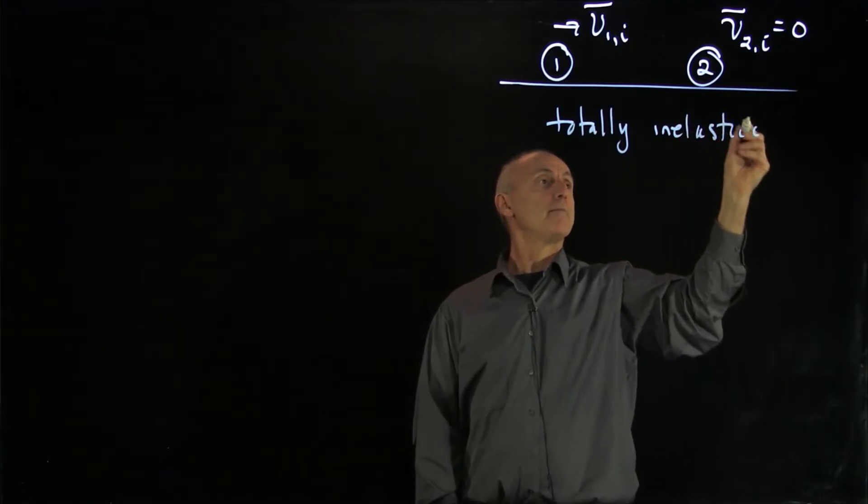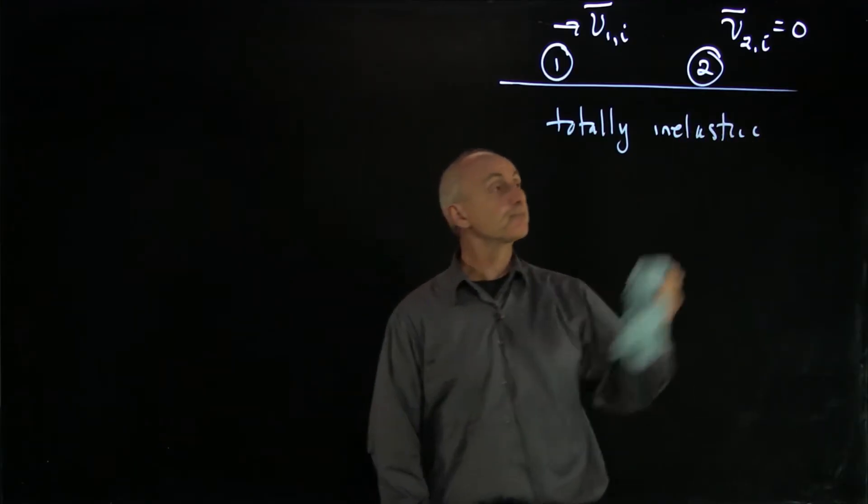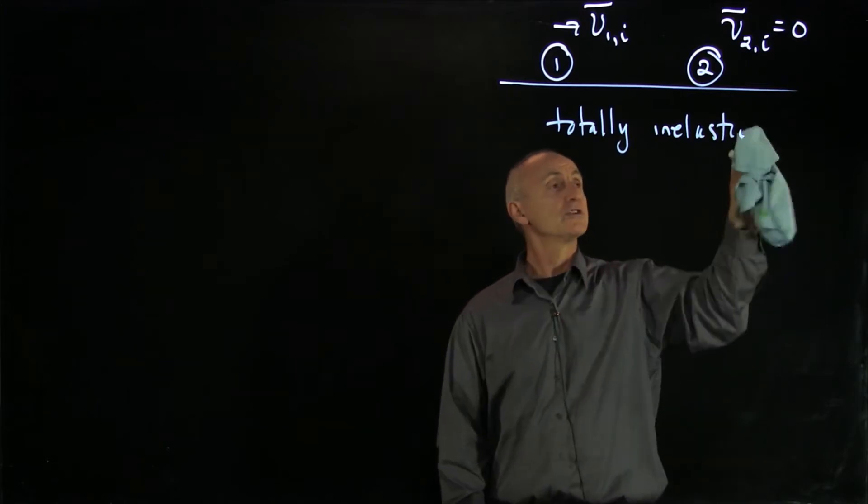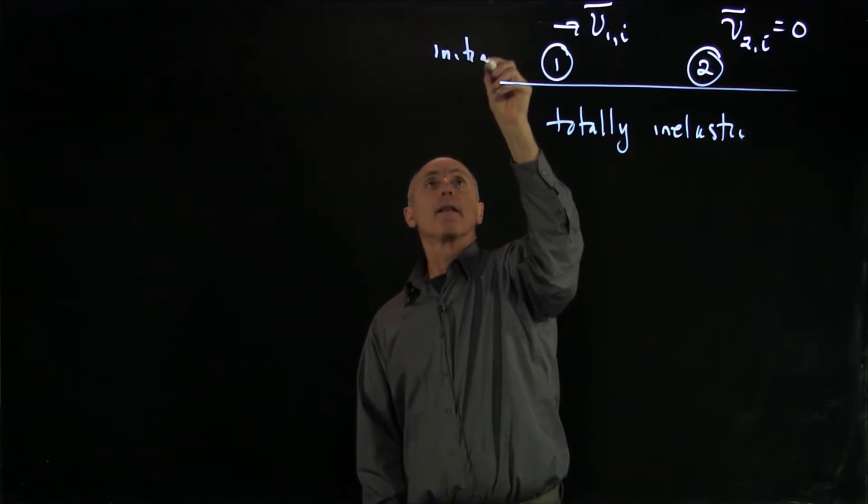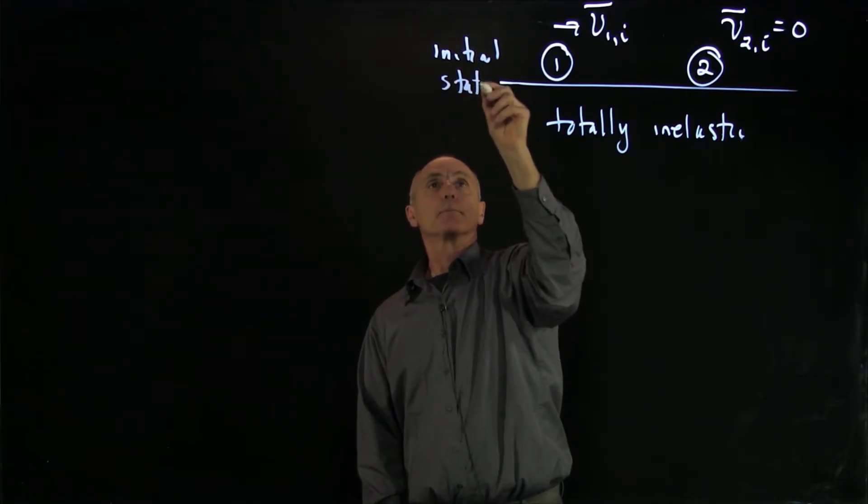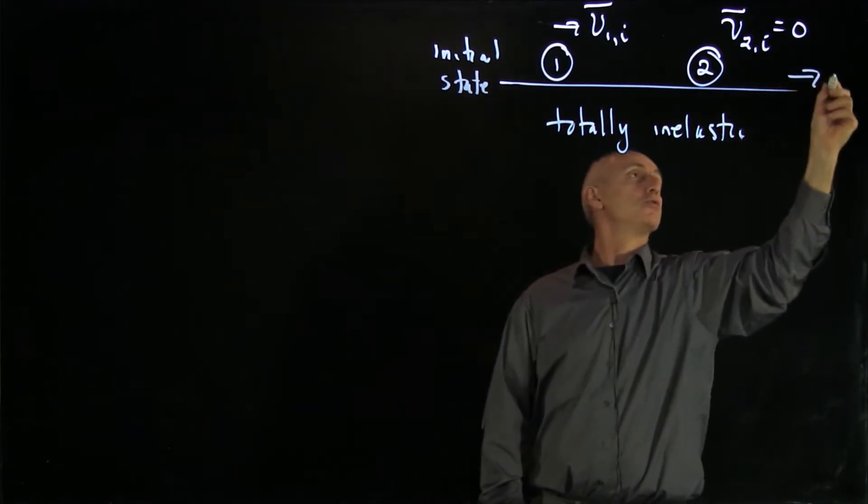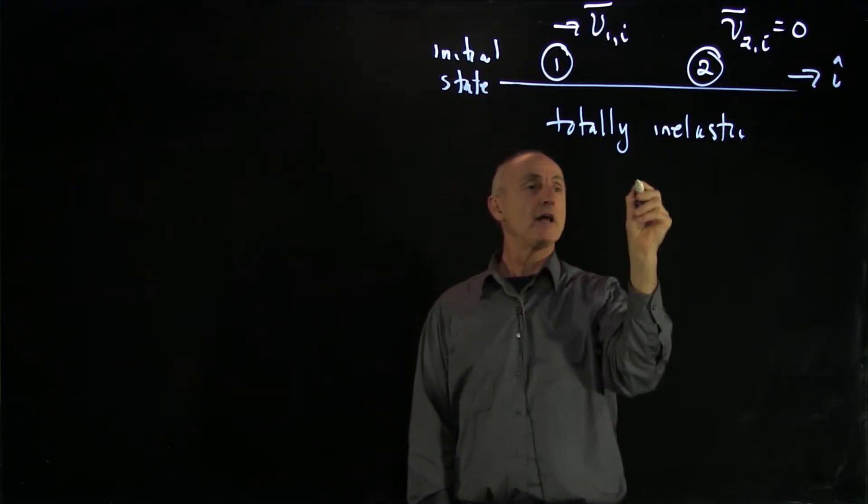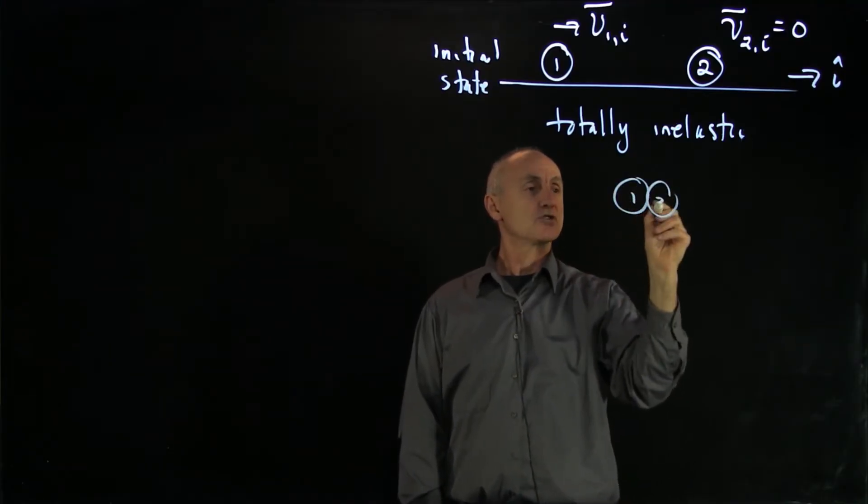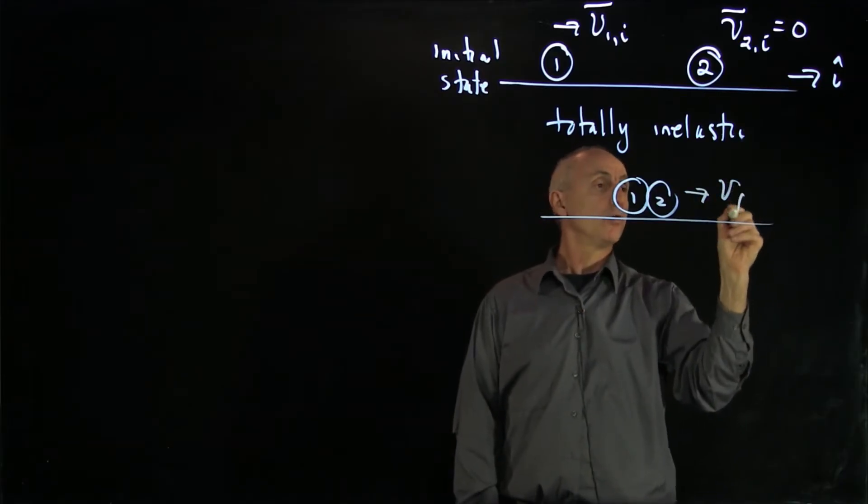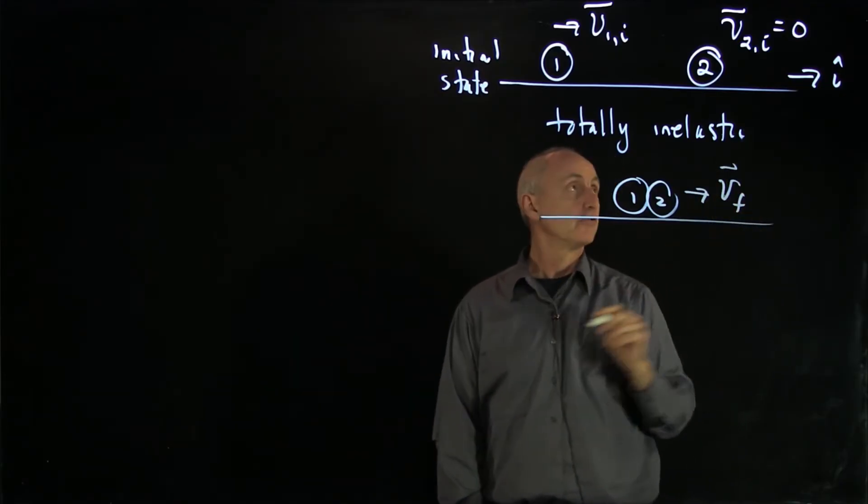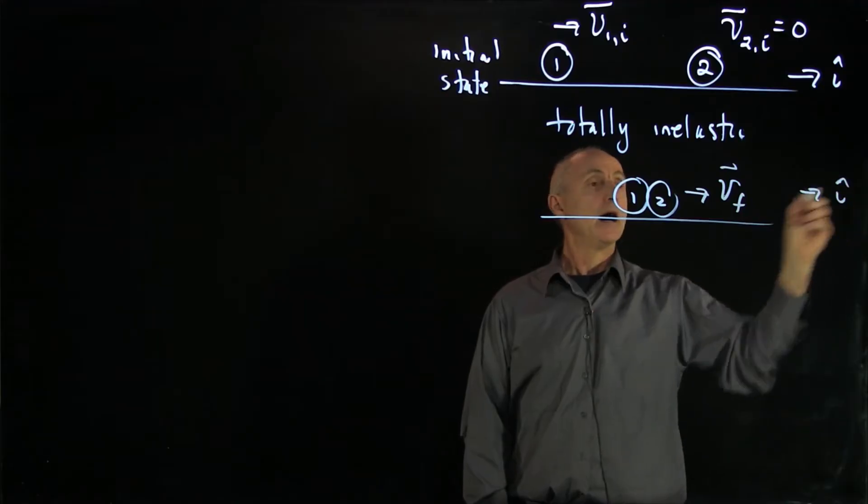Now, what that means is that the two particles stick together. So if this is our initial state, and let's again choose a direction i hat, then our final state will just stick those two particles together and they're going to move. We only need one velocity for the final state, i hat.